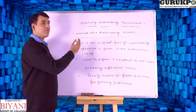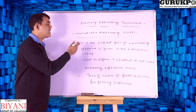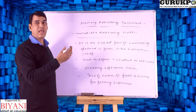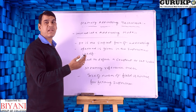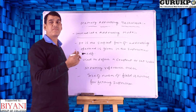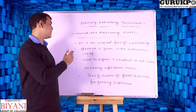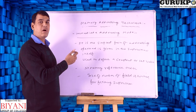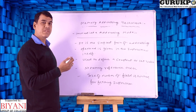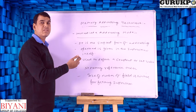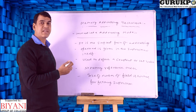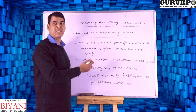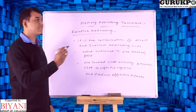Another addressing mode is called immediate addressing mode. It is basically the simplest form of addressing. The operand is given in the instruction itself — it is used to define a constant or set value. The advantage is that no memory reference is required to fetch the data. The disadvantage is that the size of the number field is limited.